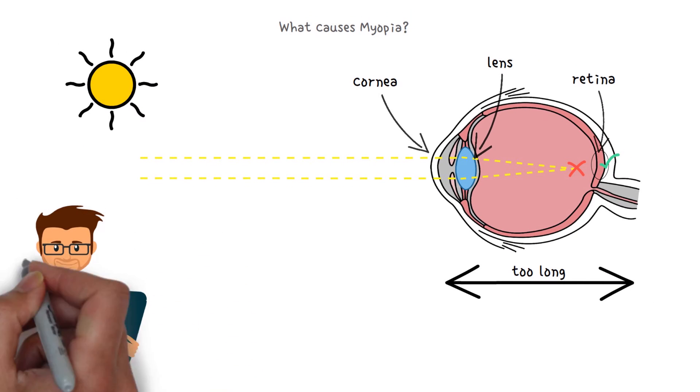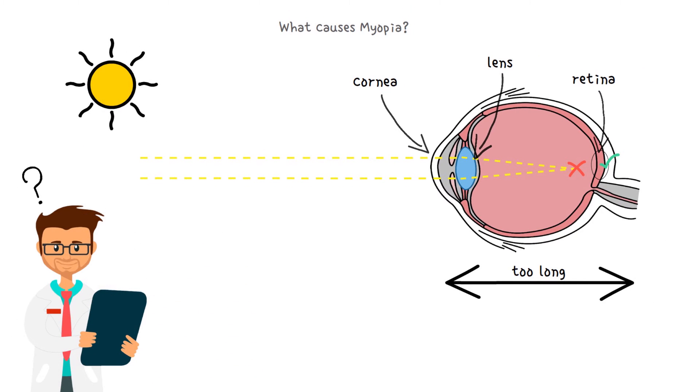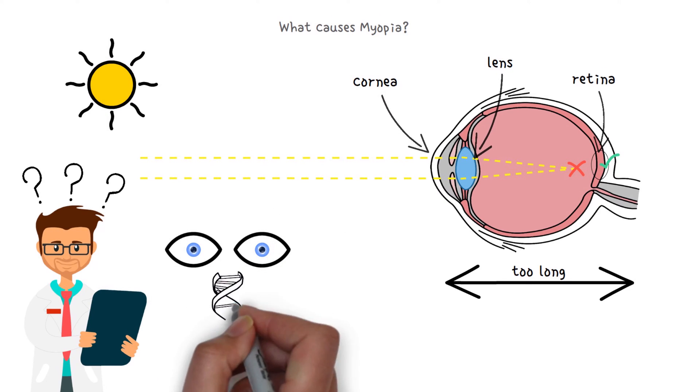Although scientists do not yet know the exact causes of myopia, there are many factors, such as genetics, that could increase the likelihood of developing it.